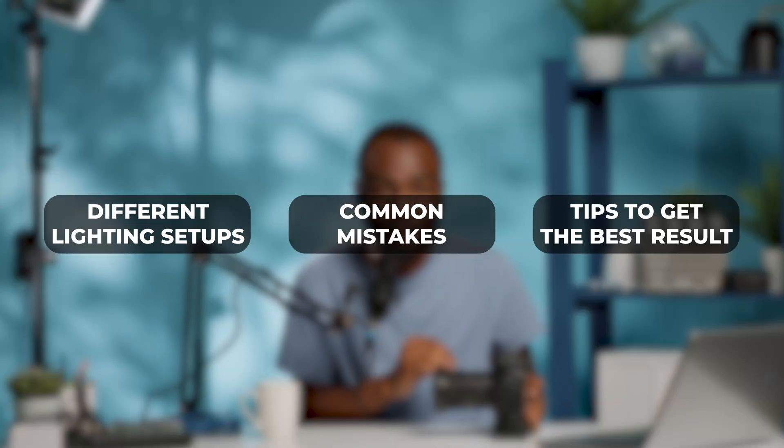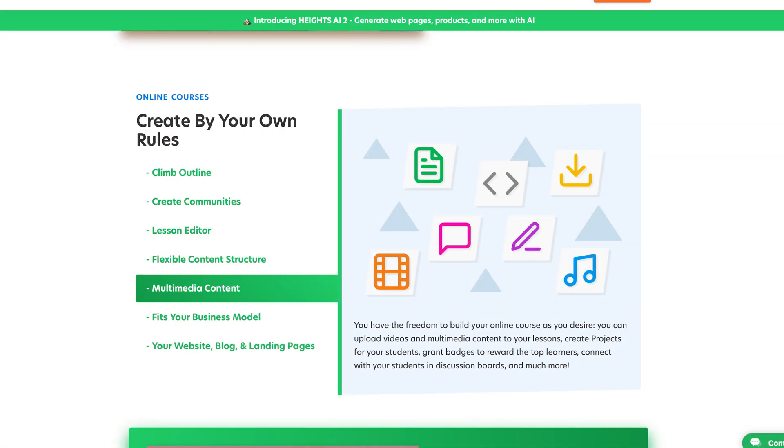Number two is lesson content suggestions. One of the hardest parts of creating a course is knowing what content to put in each lesson. After you've got your outline, the AI provides lesson content suggestions based on the topics of each lesson. For example, if you're teaching a photography class and you've created a lesson about lighting techniques, Heights AI will give you ideas for what to talk about — like different lighting setups, common mistakes, and tips to get the best results. It even helps you write lesson descriptions and provides ideas for multimedia like images or video content you could include.